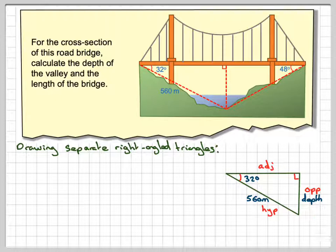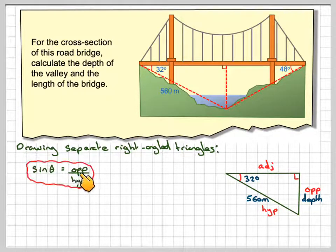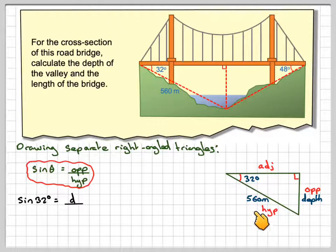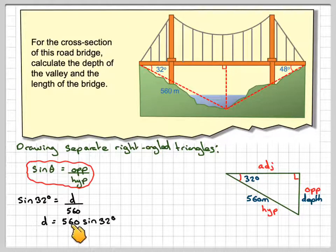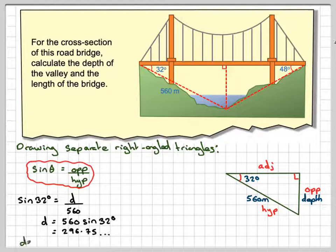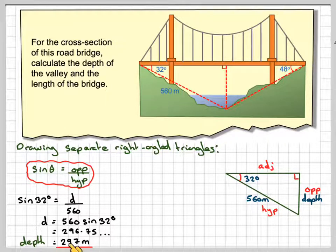So calculating the depth first, we've got opposite, hypotenuse and angle, so that means I need to use sine theta is opposite over hypotenuse. So sine of 32 is equal to the depth, which I'm going to call D, divided by the hypotenuse, which is 560. And that means that the depth will be 560 sine 32, using my calculator, that will give me 296.75 metres.